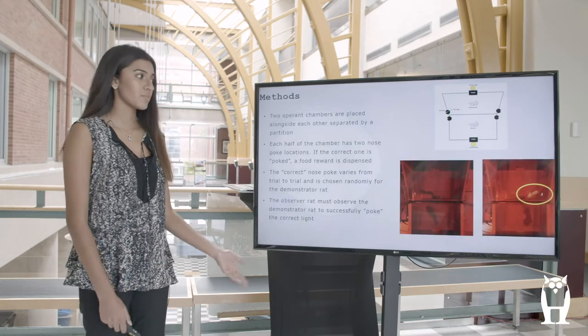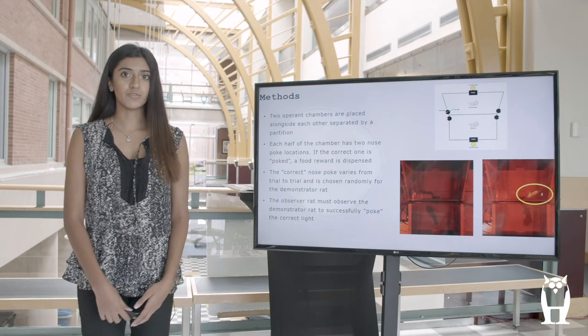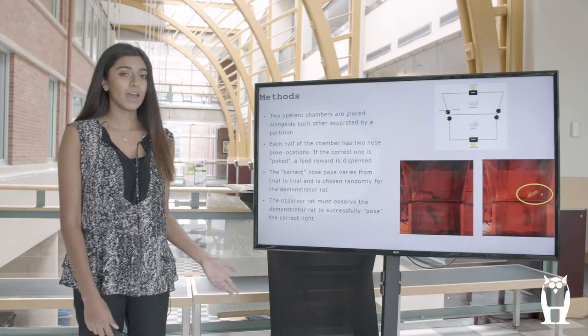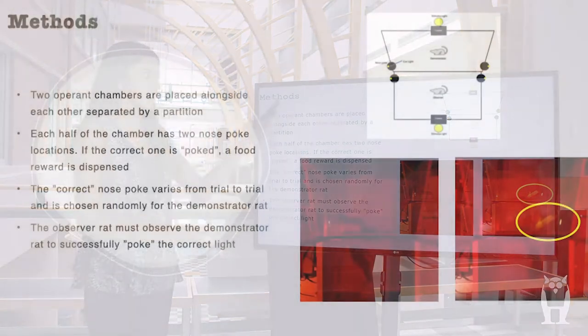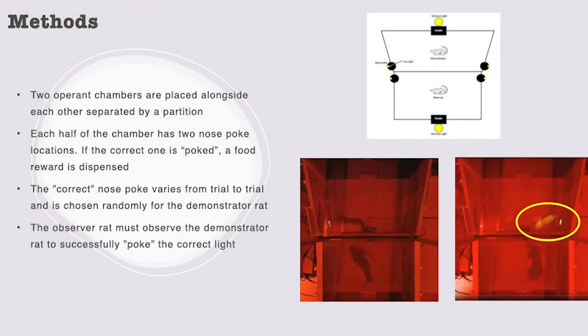In my experiment I decided to use two different types of rats: a demonstrator rat and an observer rat. Shown below is the observer rat and on top is the demonstrator rat. These two rats were separated by an operant chamber with a partition in the middle, and this partition allowed the observer rat to observe the actions of the demonstrator rat. The demonstrator rat knew what it had to do, while the observer rat had to simply learn how to do an action by following the demonstrator rat.